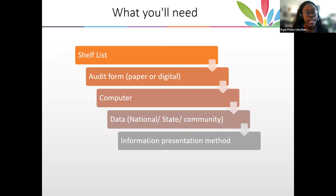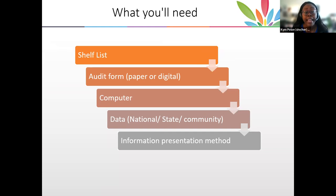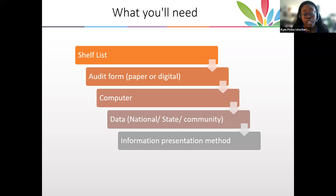What you're going to need: a shelf list, an audit form — be it paper or digital — where you keep track of all the information. In the slides you were given, the very last slide has my contact information and a link to an inclusive collections LibGuide page that I created. On that page is an actual audit form template. I suggest a computer for keeping track of information and researching representation, plus national, state, and community data, and then an information presentation method. But be really careful when leaning too deeply into community or state data.